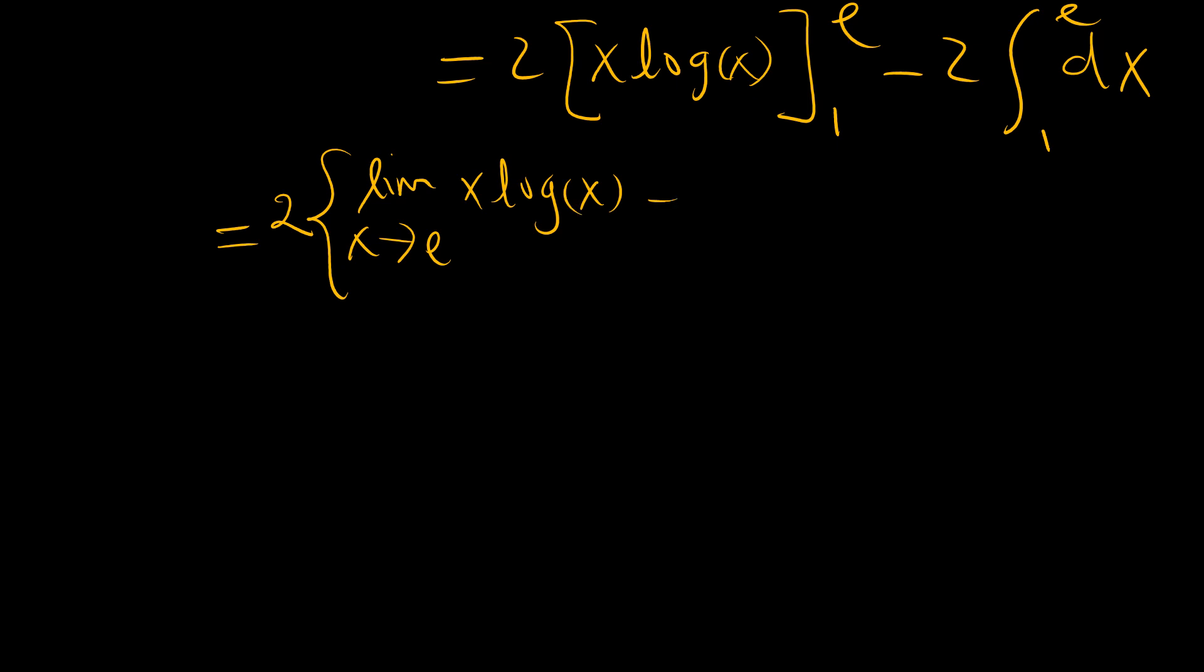So our problem now becomes x natural logarithm of x, 1 to e minus the integral of 1. Okay, so let's spread this out a little bit. So 2, limit as x tends to e of x natural logarithm of x, minus limit as x tends to 1 of x natural logarithm of x.